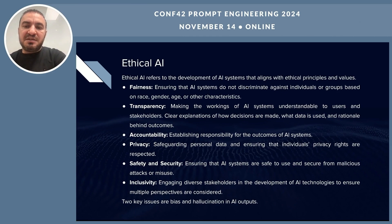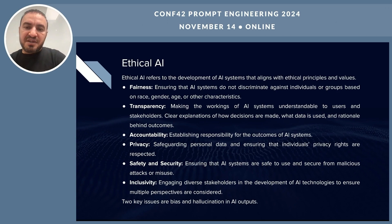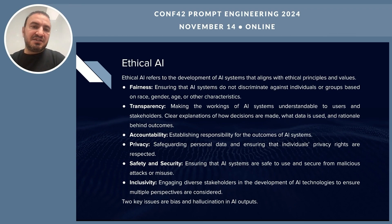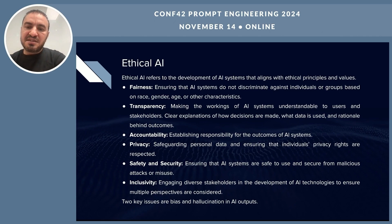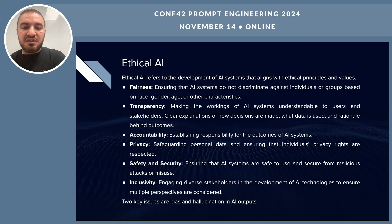Now let's talk about the ethical part of AI. What do we mean by ethical AI? It's mainly about developing AI systems that align with core ethical principles and values like fairness, transparency, accountability, privacy, safety, and inclusivity. In short, ethical AI systems should treat everyone fairly regardless of their race, age, gender, or any other factors. They should make their processes clear, keep personal data secure, and respect diverse perspectives. The two key issues we face with ethical AI are bias and hallucination, which I'll go into in the next slide.